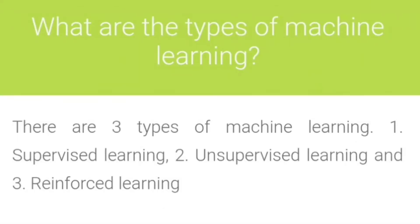What are the types of machine learning? There are three types of machine learning: supervised learning, unsupervised learning, and reinforced learning.